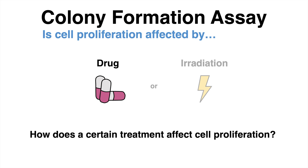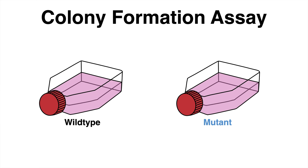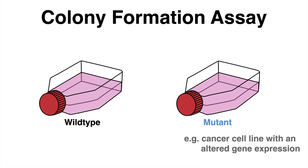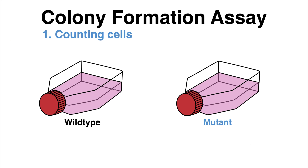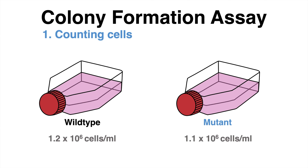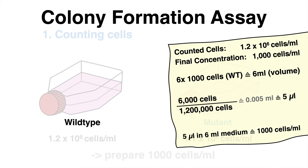In our example, a researcher wants to compare the effect of a drug on wild-type and mutant cells. Those mutant cells could resemble a cancer cell line which has some mutated genes. Both cell lines are grown in culture, and in the first step the cells need to be counted. This can either be done by hand using a cell-counting chamber or by automated cell-counting systems. After counting the cells, the aim is to prepare a cell suspension with a defined number of cells — in this example, 1000 per milliliter.